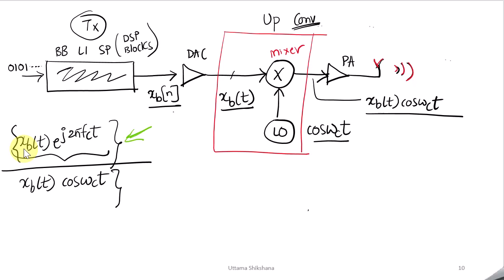When we do this kind of operation, we cannot implement it in terms of a circuit because this is a complex quantity. For real-time practical systems, to design the circuit we need a real quantity. So if we take the real part of this, we get a particular equation that we could implement in terms of circuits. This is part of the up-conversion, and finally after the output of this up-conversion we get the transmitted equation.